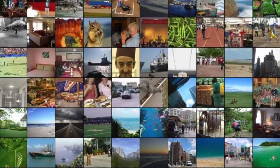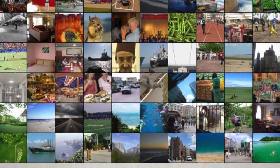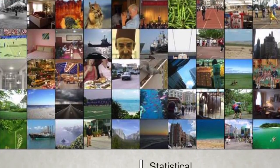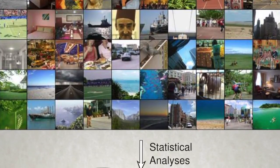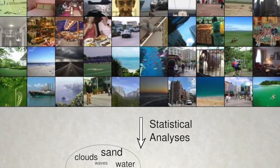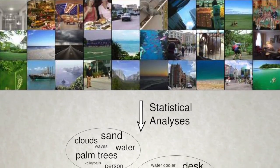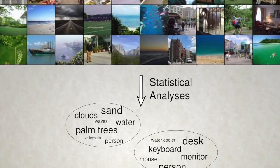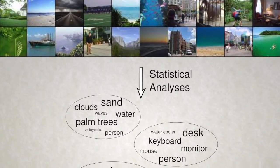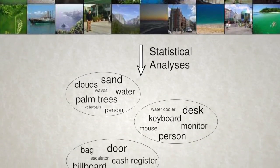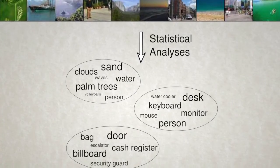To recover the intrinsic categorical structure of natural scenes, we first labeled all the visible objects in a library of over 4,000 natural scene images. We then used a statistical learning algorithm to analyze these labels. This particular algorithm was developed originally to recover the underlying topics in large collections of text. When applied to the object labels, the algorithm learns which objects tend to group together in the images. These groups correspond to scene categories.